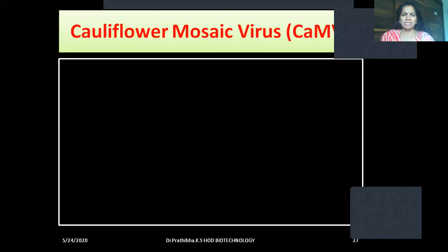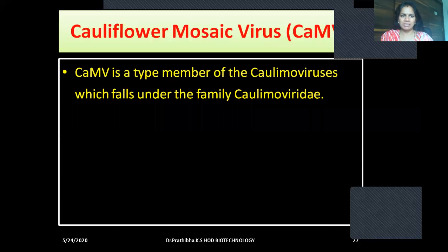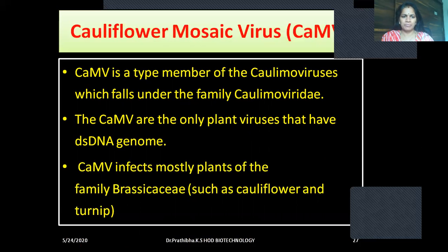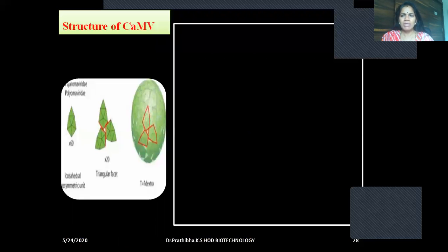Now, let us go through the cauliflower mosaic virus. CaMV is a type member of the Caulimovirus, which falls under the family Caulimoviridae. CaMV is one of the only plant viruses that have a double-stranded DNA genome. CaMV infects mostly plants of the family Brassicaceae, such as cauliflower and turnip. Now, let us go through the structure of CaMV.